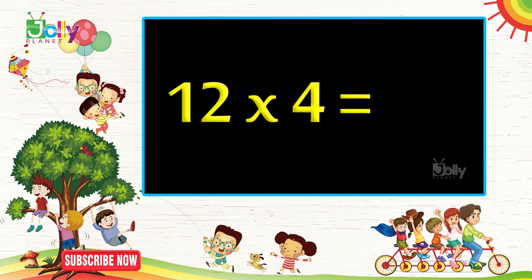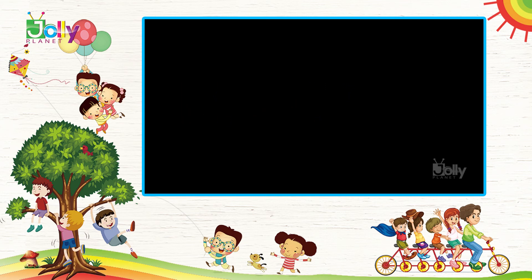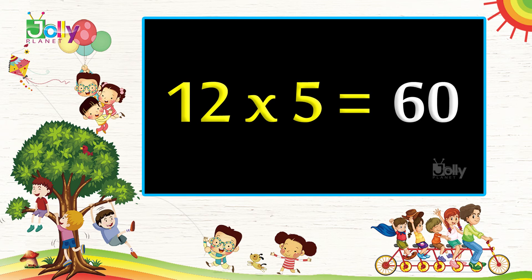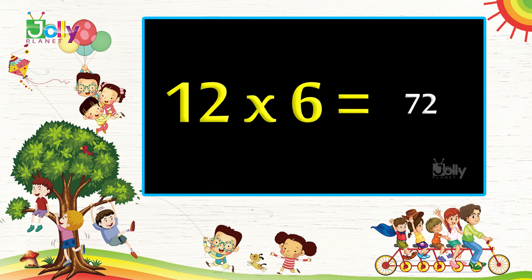Twelve fours are forty-eight. Twelve fives are sixty. Twelve sixes are seventy-two.